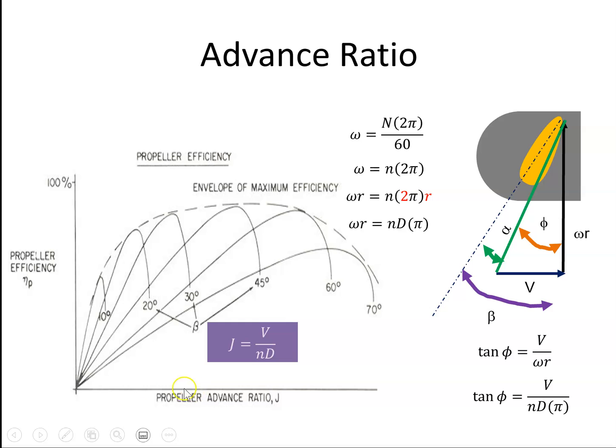And you can see that here, for any given blade angle. So here it's 70, this angle here, say it's 70 degrees. As the advance ratio goes up, you can see the efficiency of the propeller increases up to a particular point. So it relates to the efficiency of a propeller.